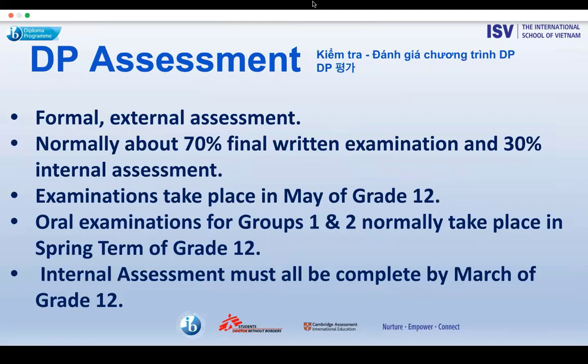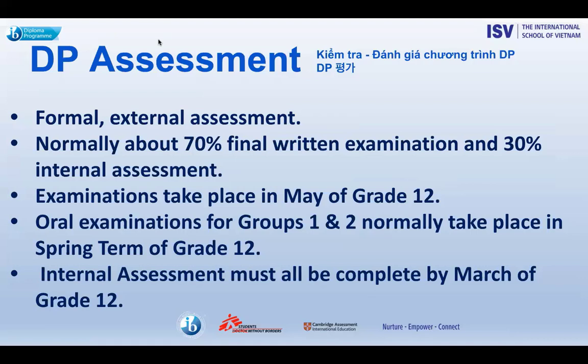For the DP, it is a formal external assessment — normally around 70% for final written examinations and around 30% for in-school internal assessment. IB DP internally written and externally assessed examinations take place in May of grade 12. The official timetable is released in late winter and shared by our Diploma Coordinator with students and parents. Oral examinations for Group 1 and Group 2 languages normally take place in the spring term of grade 12, and all internal assessments must be completed by March of grade 12.